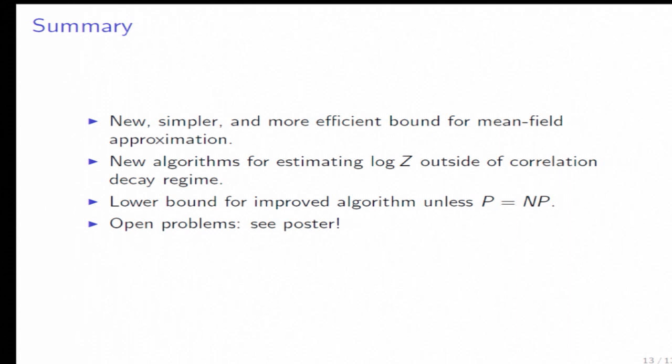So just a quick summary is, we have a much simpler bound for mean field approximation now. We have new algorithms for estimating log Z. They don't require any kind of correlation decay, which is usually the case for Markov chains. And you can't get really a better algorithm unless P equals NP. And there are some good open problems, but I won't explain them now.